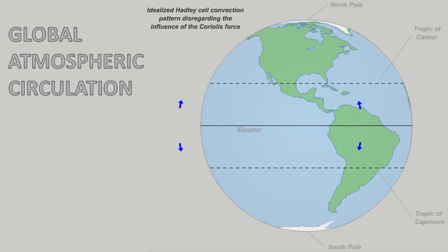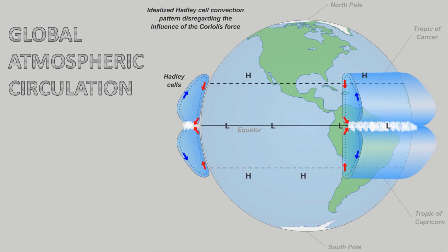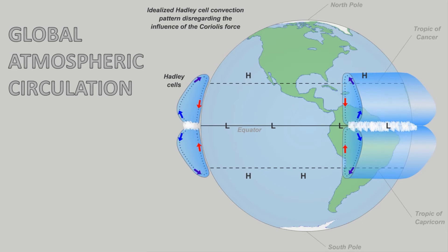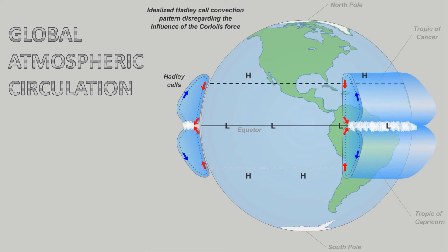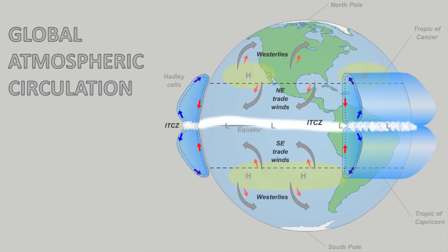At the equator, a band of low pressure forms where warm humid air rises, condenses, and creates massive amounts of precipitation. This band is known as the Intertropical Convergence Zone, or ITCZ.